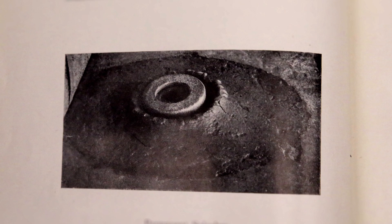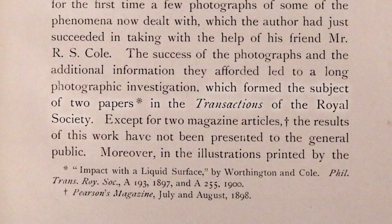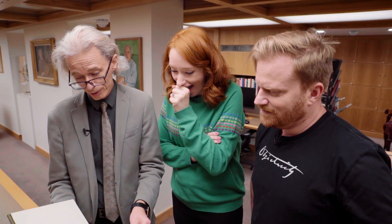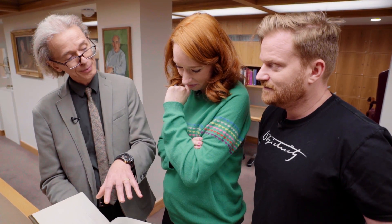This is a projectile going into armour plate - freezing the splash. He got appointed Fellow of the Royal Society. He writes: 'The success of the photographs and the additional information they afforded led to a long photographic investigation which formed the subject of two papers in the transactions of the Royal Society. In the illustrations printed by the Royal Society, much of the beauty of the original photographs was lost in the reproduction, or was sacrificed in a selection of which the only object was the elucidation of points of technical scientific interest.' He's having a little swipe - he feels like he's been shortchanged, and he appreciates the artistic beauty of what he's doing.